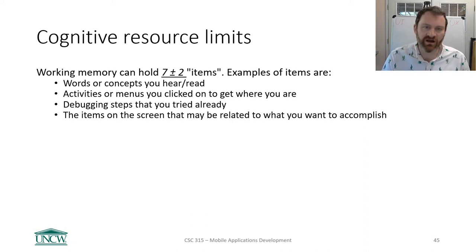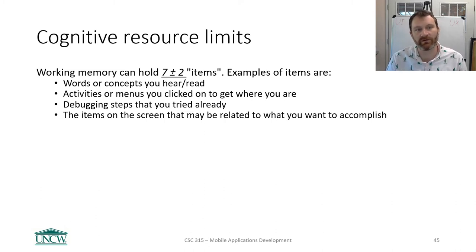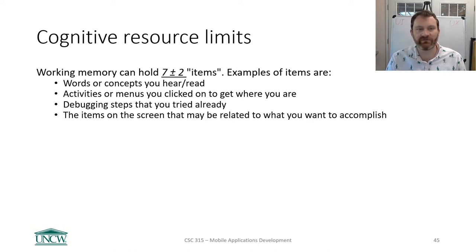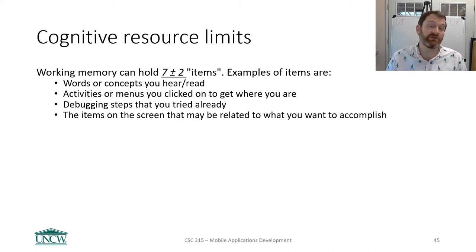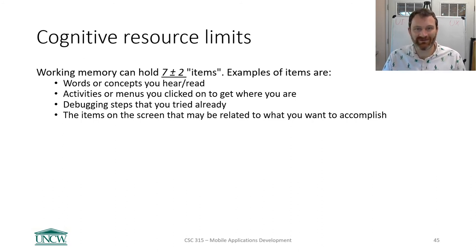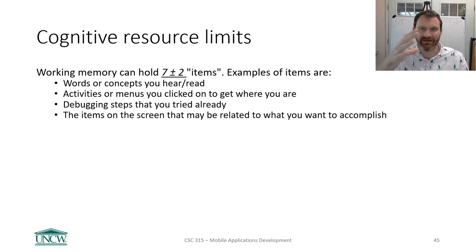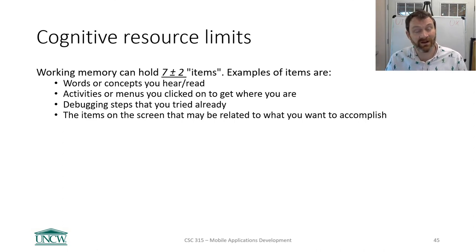We humans have cognitive resource limits. You may have heard this before: human working memory or short-term memory can hold seven plus or minus two items at any one time. Examples of items include words or concepts you hear, activities or menus you clicked on to get where you wanted to be, and debugging steps you have already tried. You're all programmers — you're trying to get a nasty bug out of your code, and you've got in your head how you got to this point. This is why debugging is so hard — you can only keep so much in your brain at once.